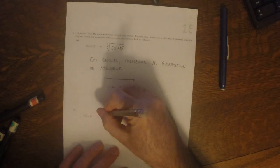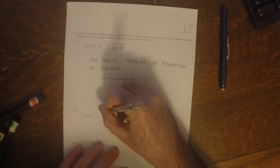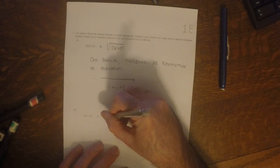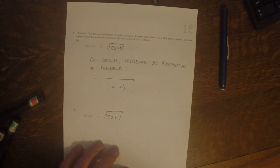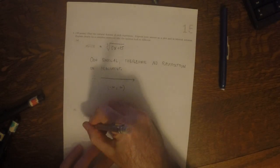So, again, for the camera, this is 6th root of 5x plus 15. So, this is an even radical.